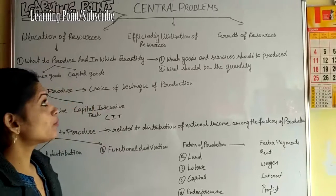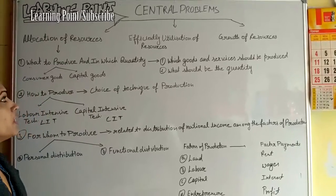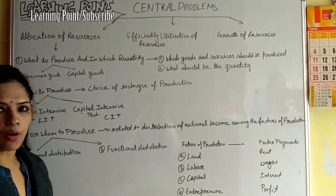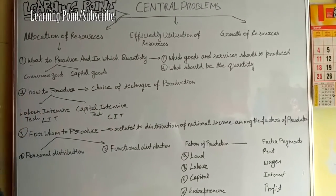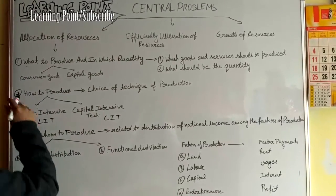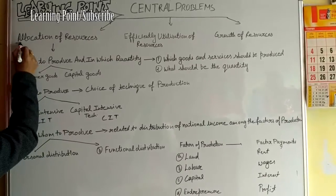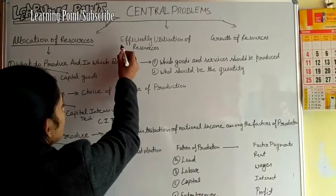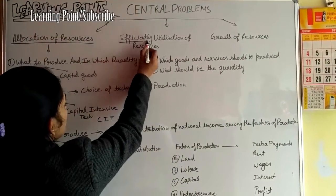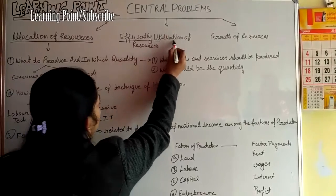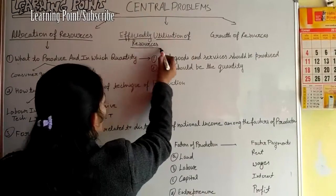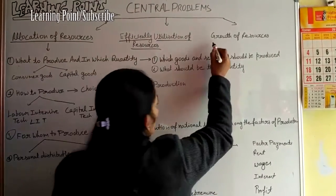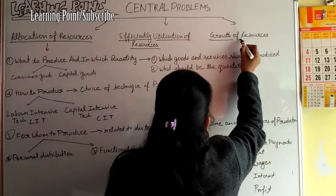Now, central problems. There are three types of central problems. First is allocation of resources. Second is efficient utilization of resources. And third is growth of resources.